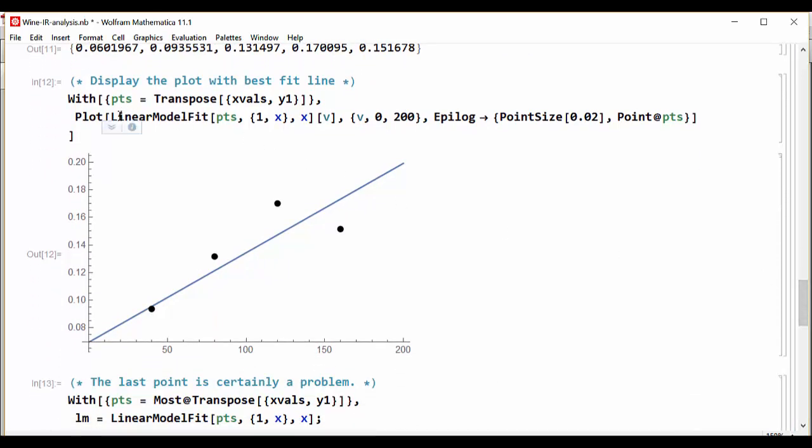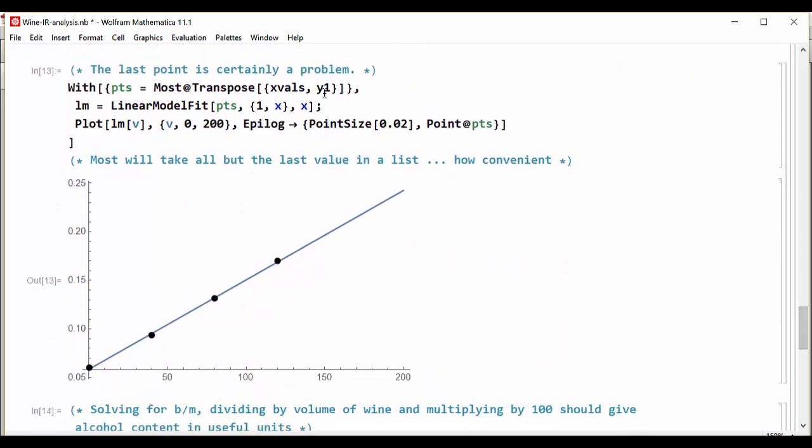When we plot this along with the linear model, we see that that fifth point is causing some troubles. The first point is actually not on this screen. So it's clearly an issue and so that needs to be removed. Fortunately it's the very last point, and so we can make a Mathematica trick here where we use the most command, and that chooses all of the data in a list except for the last one.